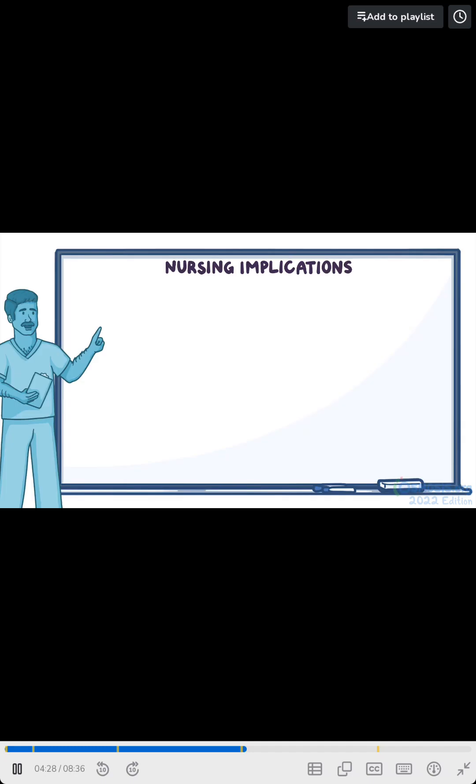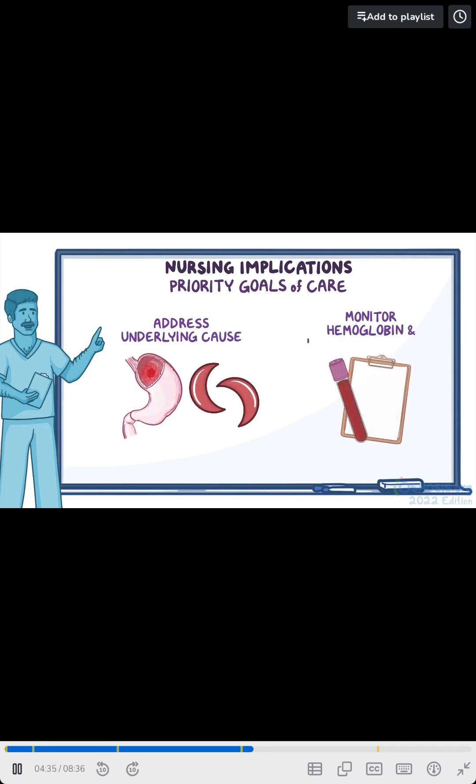For a client with an altered hemoglobin or hematocrit, your priority goals of care are to address the underlying cause and to monitor your client's hemoglobin and hematocrit levels.